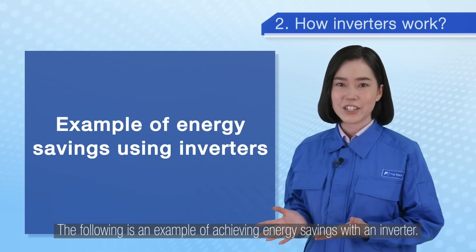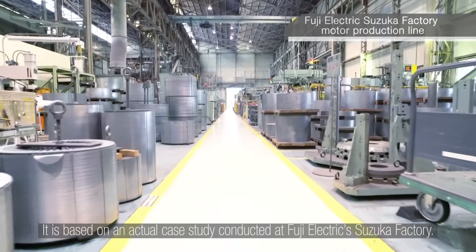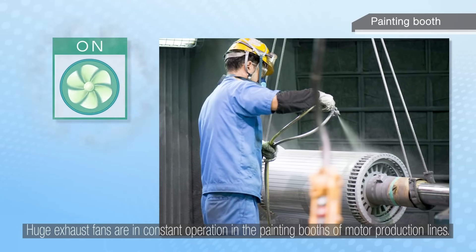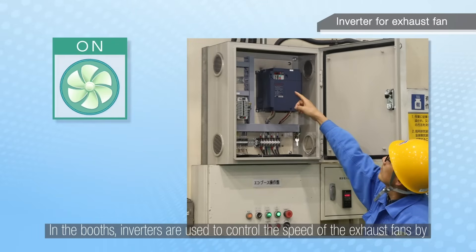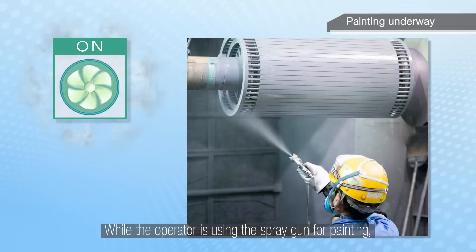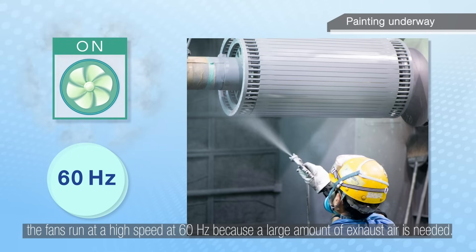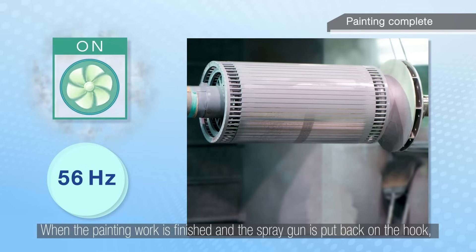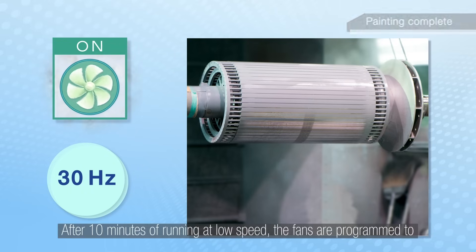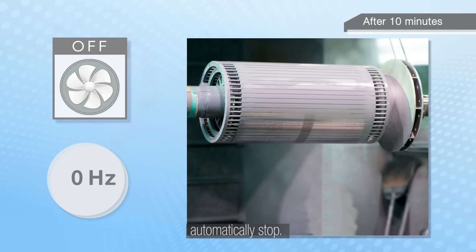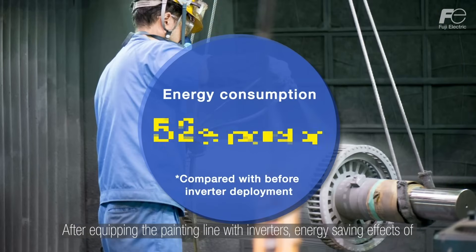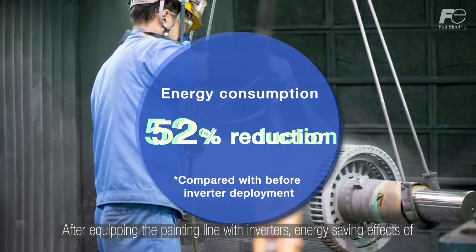The following is an example of achieving energy savings with an inverter, based on an actual case study conducted at Fuji Electric's Suzuka factory. Huge exhaust fans are in constant operation in the painting booths of motor production lines. Inverters are used to control the speed of the exhaust fans by automatically linking to the painting process. While the operator is using the spray gun for painting, the fans run at high speed at 60 Hz because a large amount of exhaust air is needed. When the painting work is finished and the spray gun is put back on the hook, the fans run at a low speed of 30 Hz because only a small amount of exhaust air is needed. After 10 minutes of running at low speed, the fans are programmed to automatically stop. The key to achieving energy savings is to control the fans' frequency to ensure the required exhaust volume. After equipping the painting line with inverters, energy saving effects of about 52% were achieved.